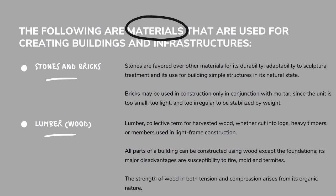Bricks may be used in construction only in conjunction with mortar, since the unit is too small, too light, and too irregular to be stabilized by weight alone. Lumber or Wood. Lumber is the collective term for harvested wood, whether cut into logs, heavy timbers, or members used in light-frame construction. All parts of a building can be constructed using wood except the foundations. Its major disadvantages are susceptibility to fire, mold, and termites. The strength of wood in both tension and compression arises from its organic nature.